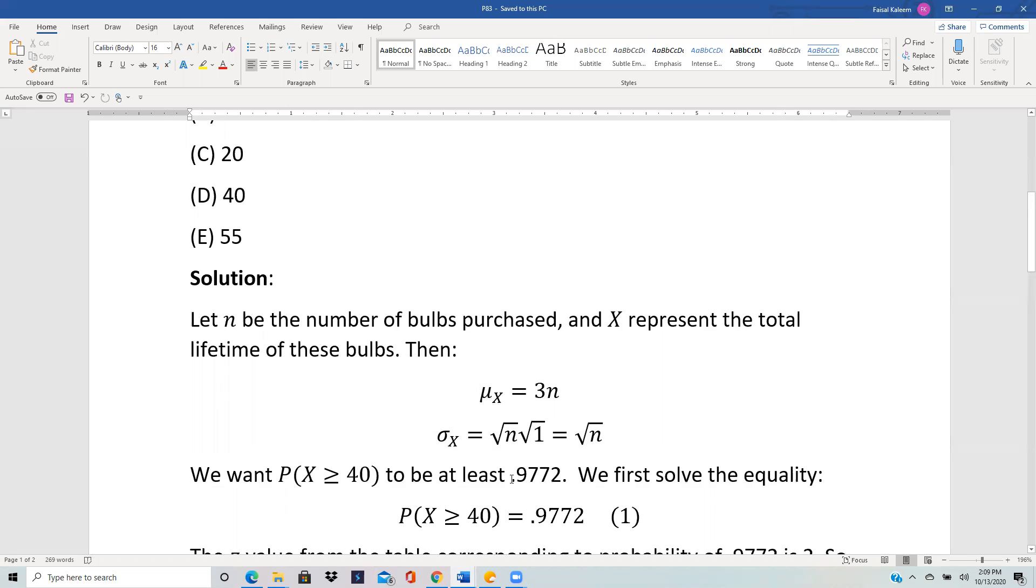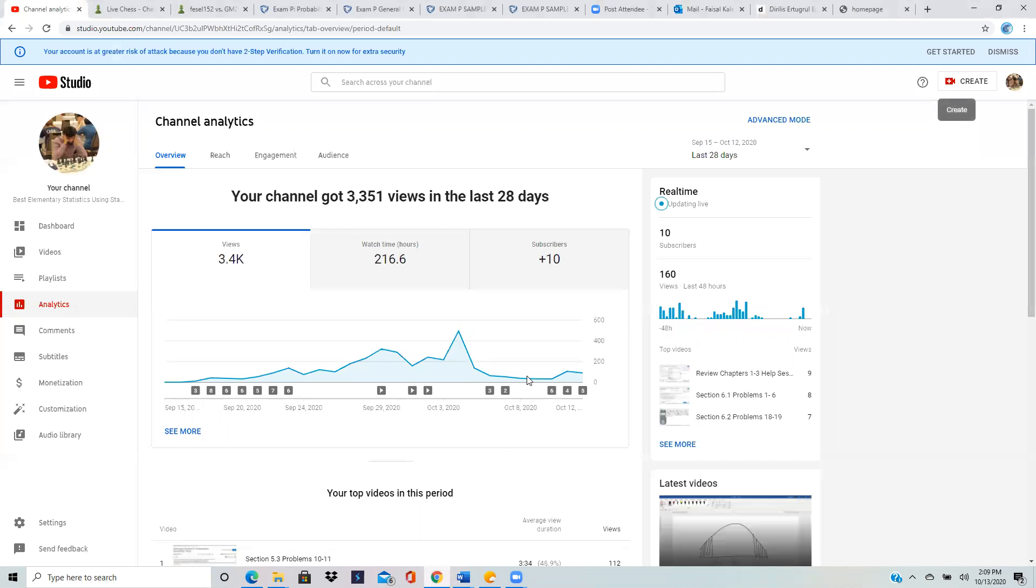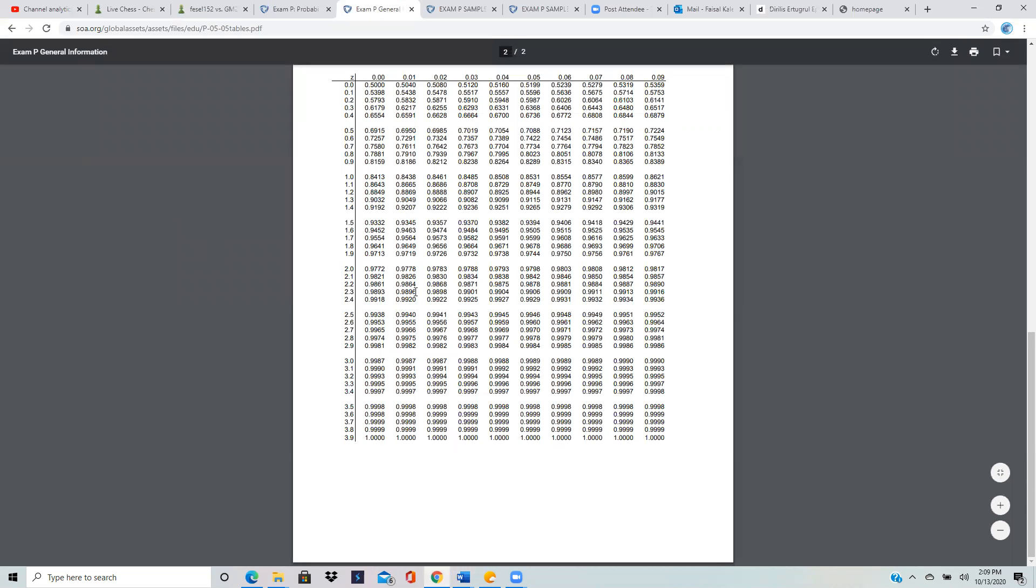Let's start by solving this probability to be equal to 0.9772. The z value corresponding to the probability of 0.9772, if we look at the table, is 2. So z = 2 corresponds to 0.9772.